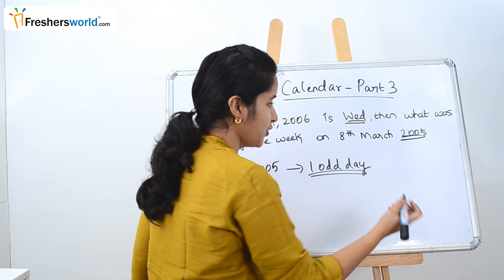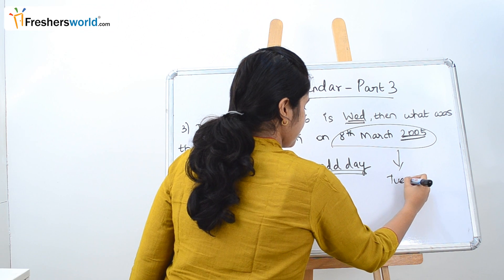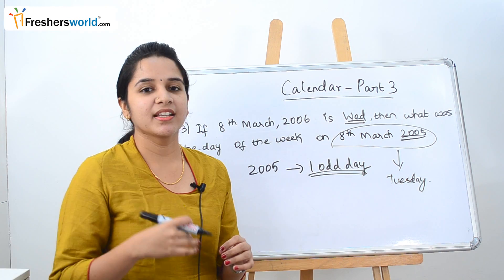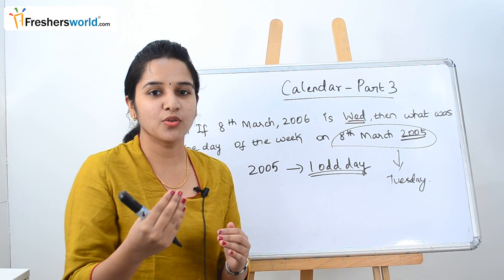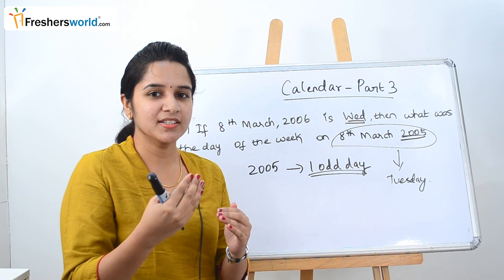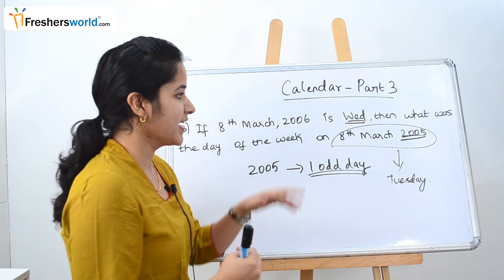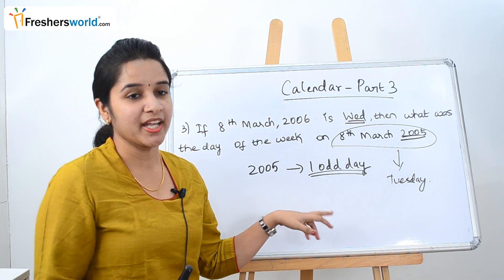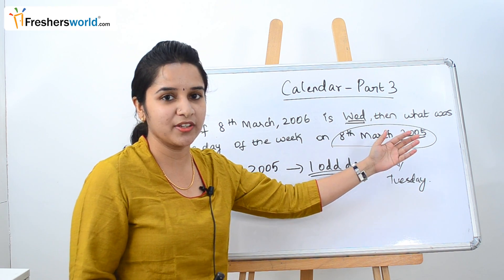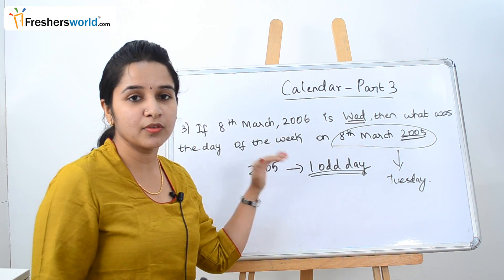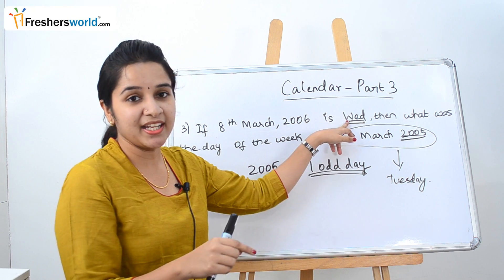Wednesday minus 1 is Tuesday. So 8th March 2005 falls on Tuesday. In the other problems we calculated odd days going forward and added them; here the question asks for a day in the past, so we subtract. If they had asked for 2001 or 2003, you would calculate the odd days for each year and subtract the total from the given day.